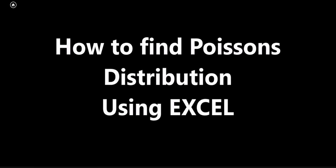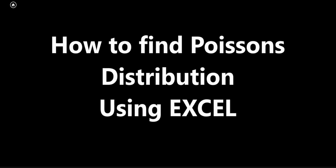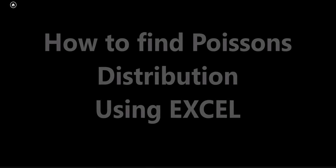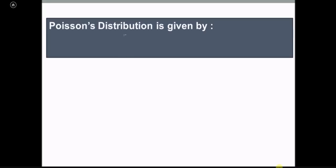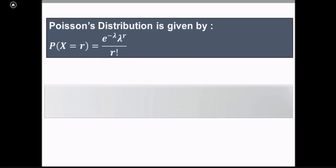We will find out the Poisson's distribution using Excel. We know that the Poisson's distribution is given by: probability of x equal to r is equal to e raised to minus lambda, multiplied by lambda raised to r, divided by r factorial, where r is the number of successes and lambda is the mean.